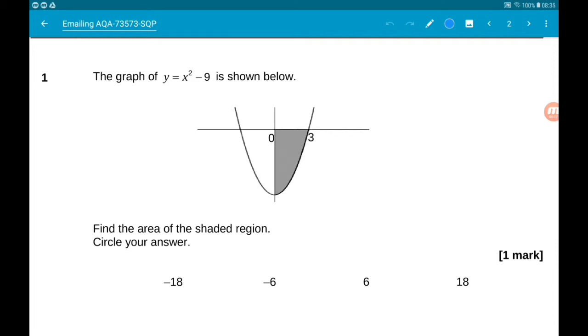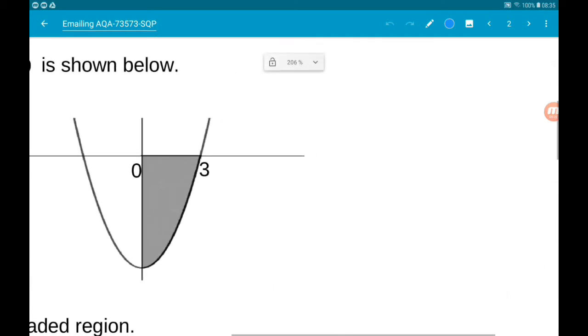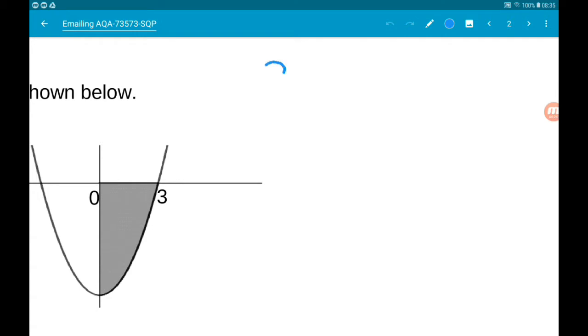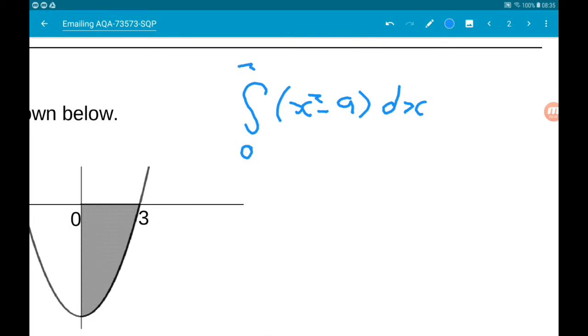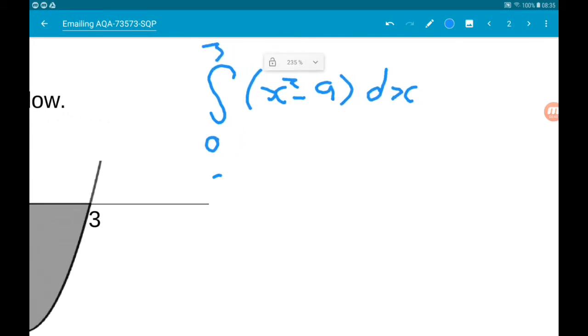The area between the curve and the x-axis is found by integration. So here we need to integrate x squared minus 9 with respect to x between 0 and 3. That is going to give us x cubed over 3 minus 9x, evaluated between 3 and 0.